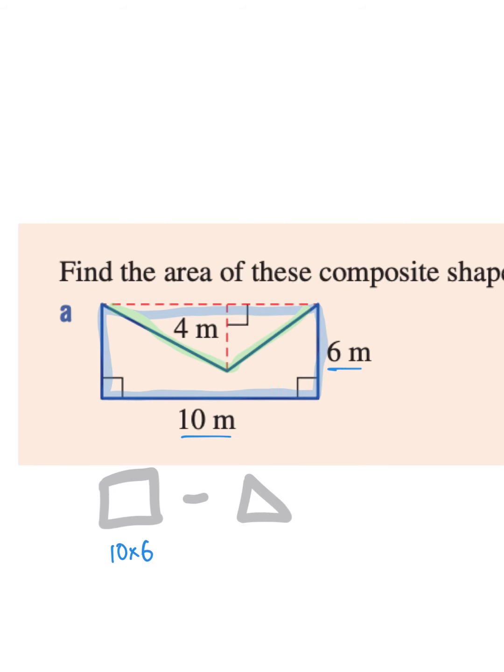Now the area of that rectangle is 10 times 6 because that's these two here, minus the area of the triangle, half times the base of the triangle, which is 10—you see that from the other side—times the height of the triangle. So 60 minus half of 10 times 4, which is 20. So our final area of this composite shape is 40 meters squared. Don't forget about your units.